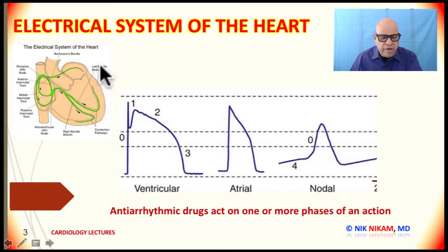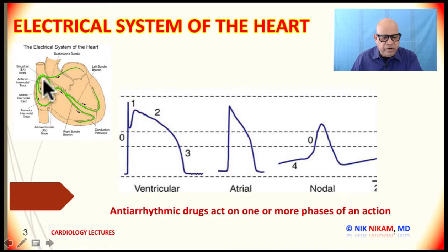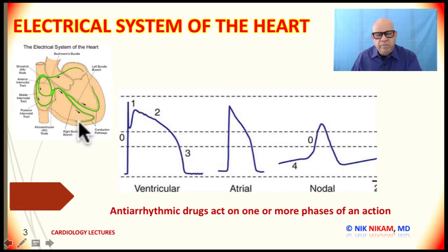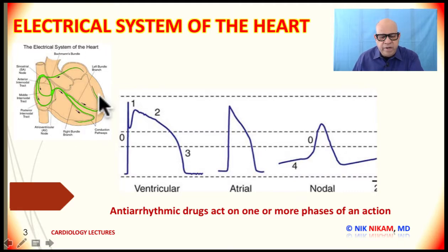Now let us look at some of the electrical features of the sinus node, the AV node, and the myocardial tissue itself, because every part of the heart has the ability to spontaneously activate itself to create a contraction of the atria or the ventricle.